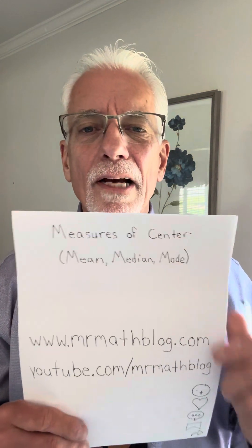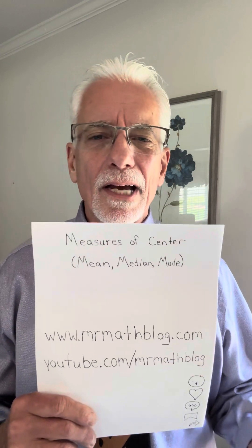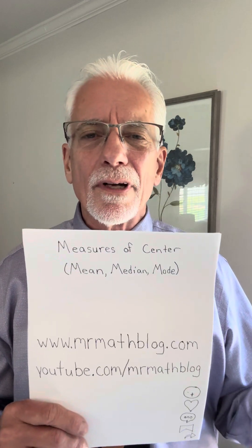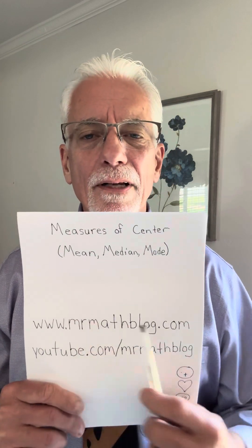Hey, groovy people, I'm John. I'm a retired math teacher. I taught middle school and high school math for 36 years. This quick lesson is on reteaching you guys how to find the mean, the median, and the mode. They're just measures of center of data that we have, so I'll give you some sets of numbers and we'll find the mean, median, and mode of those. All your lessons can be found at that super groovy website.